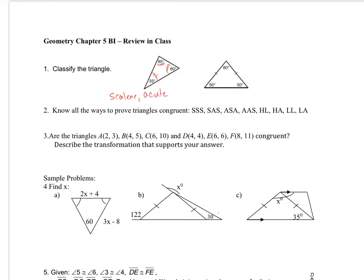So it's scalene and acute. For the second one, I know these two sides are the same, which means these two angles are the same. This one is different, so it's going to be isosceles. And since all of them are less than 90 degrees, it'll be acute. So: isosceles and acute.